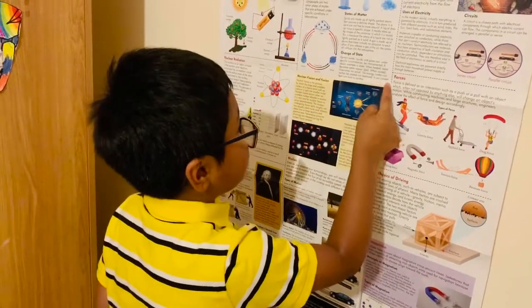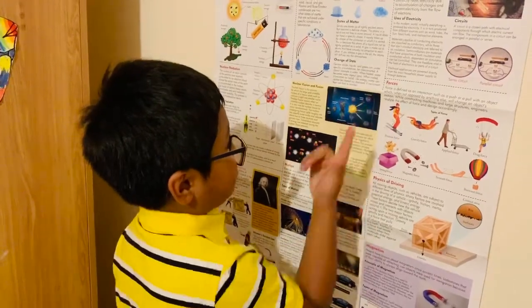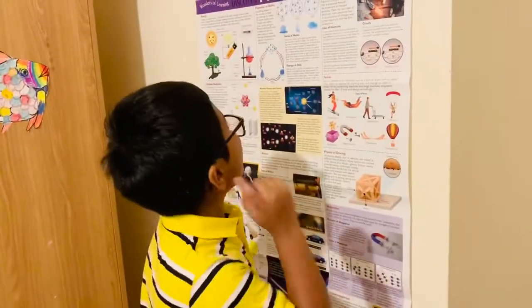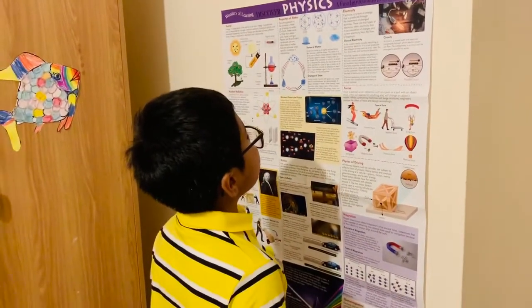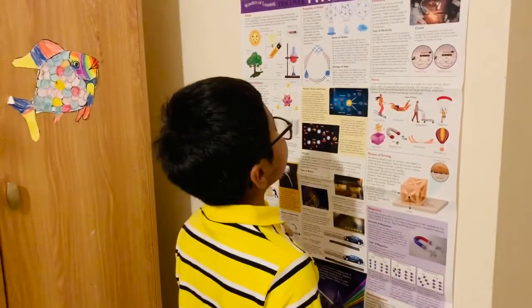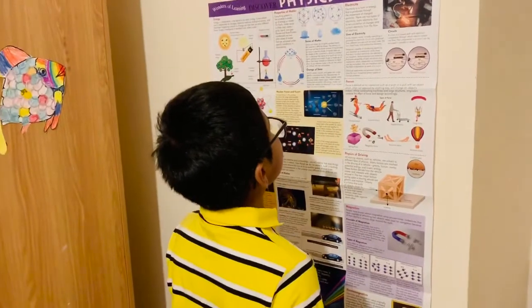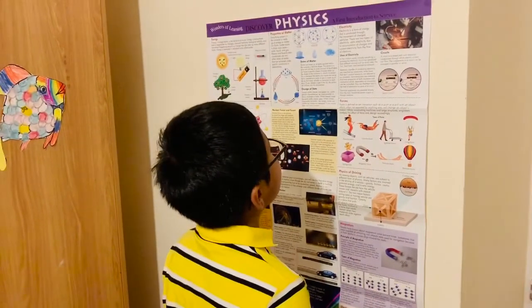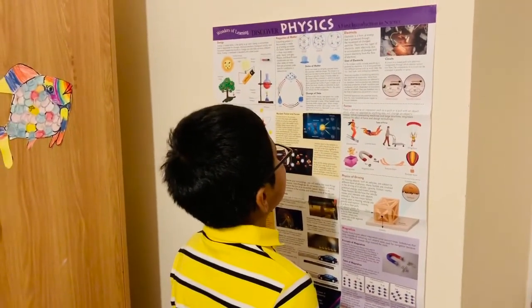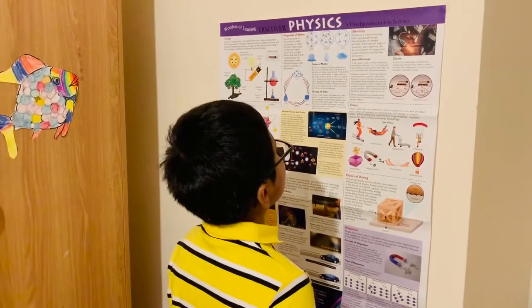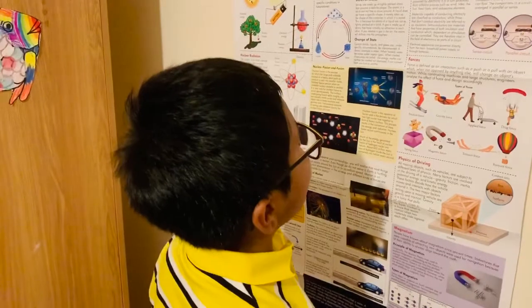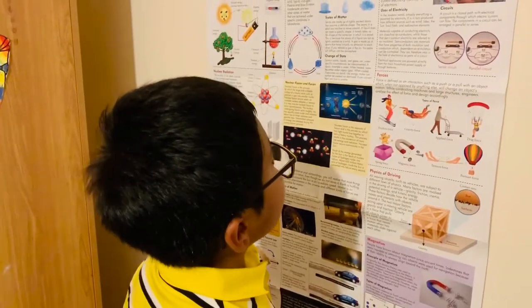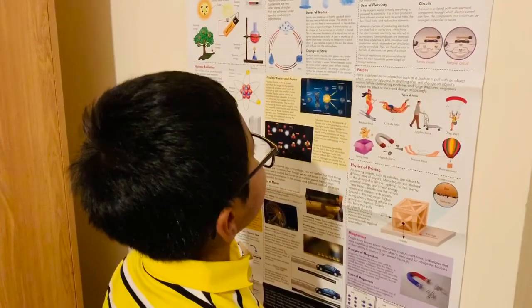Now let's do electricity. Electricity is a form of energy that is produced through the movement of charged particles. There are two types of electricity: static electricity due to accumulation of charges, and current electricity from the flow of electrons.